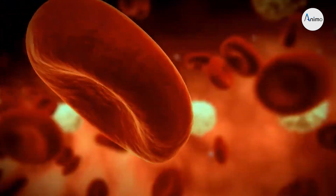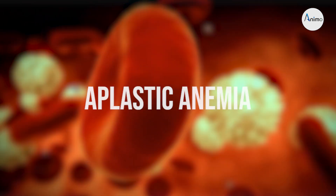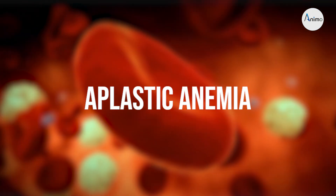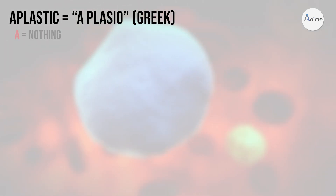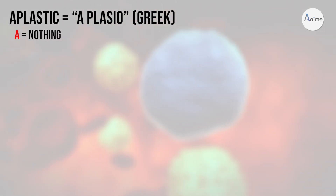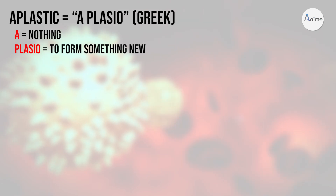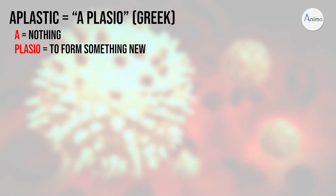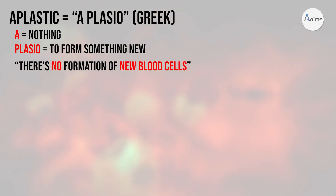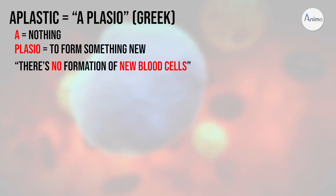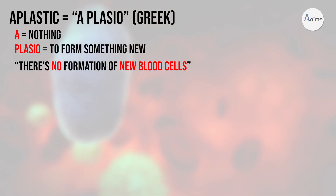Moving on to our next anemia: aplastic anemia. The word 'aplastic' comes from Greek — 'a' means nothing and 'plasio' means to form something new. So there is no formation of new blood cells in the bone marrow, which results in anemia. This is called aplastic anemia because the problem is in the bone marrow.